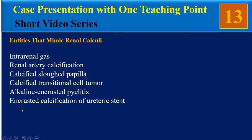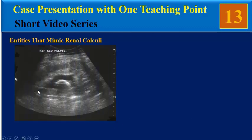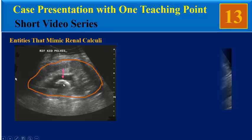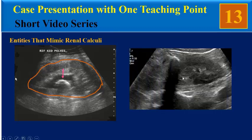The last entity is encrusted calcification of ureteric stent. In this transverse sonogram, we can see the kidney with hydronephrosis and a JJ catheter in the renal pelvis which is calcified. Our patient is not compatible with this entity.